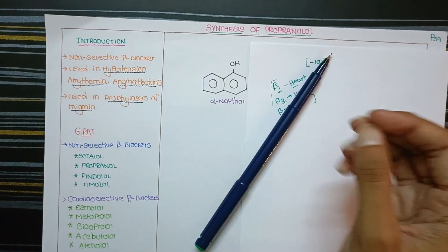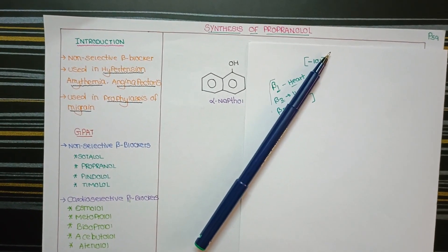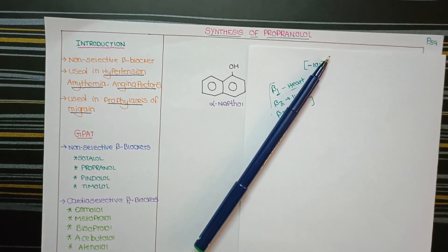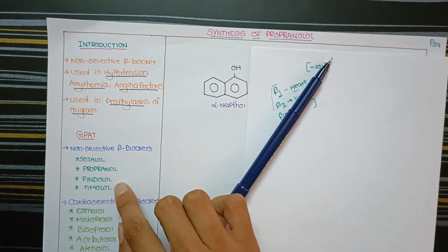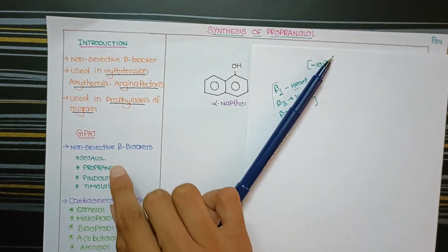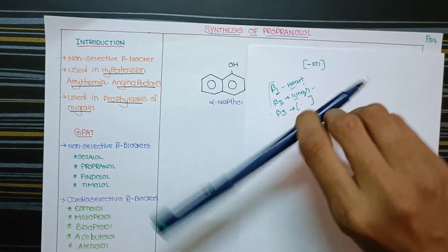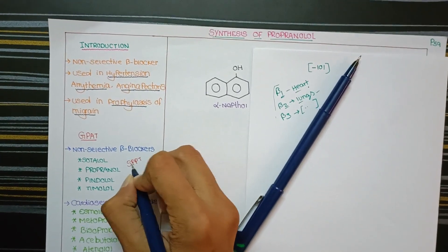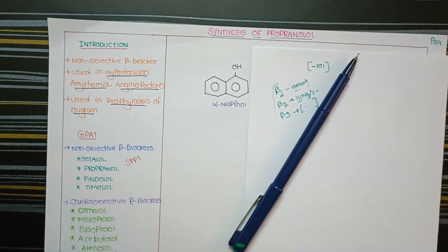For the GPAT exam: which of the following is a selective beta receptor antagonist? Non-selective beta blockers — the CPPT group — include sotalol, propranolol, pindolol, and timolol. These four drugs block both beta-1 and beta-2, and also beta-3 receptors.